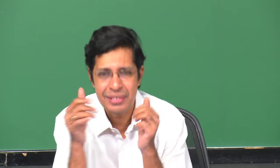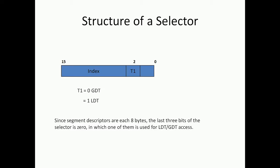Now, I was expecting this question. When we said 'far jump 0x20 colon 1000', I said go to the 32nd entry in the descriptor table. But which descriptor table? Is it the local descriptor table or the global descriptor table? How will you decide that?